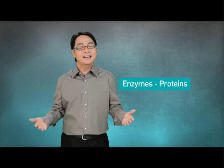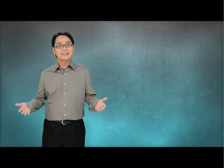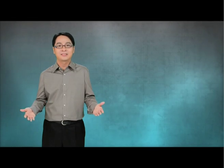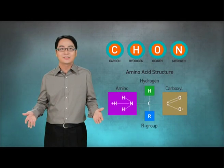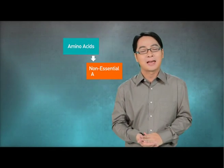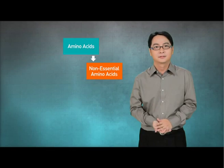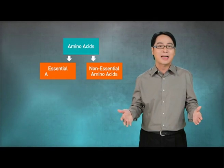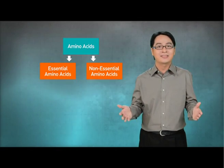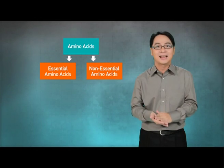Enzymes are proteins. Proteins are complex organic compounds that contain the elements carbon, hydrogen, oxygen, and nitrogen. All proteins are made out of subunits called amino acids. Amino acids that can be produced by our body are called non-essential amino acids. Amino acids that cannot be produced by our body are called essential amino acids. These amino acids must be obtained from our diet.